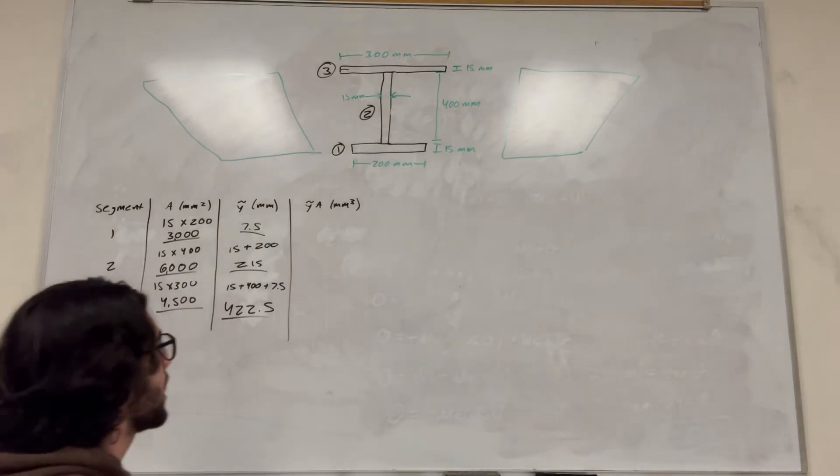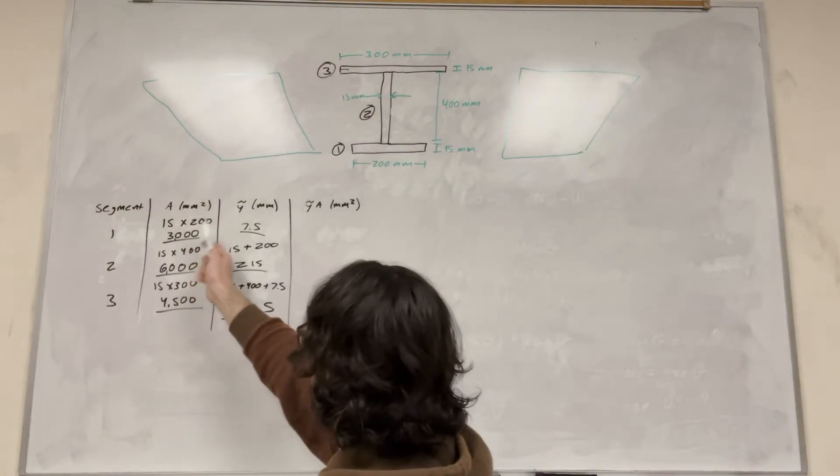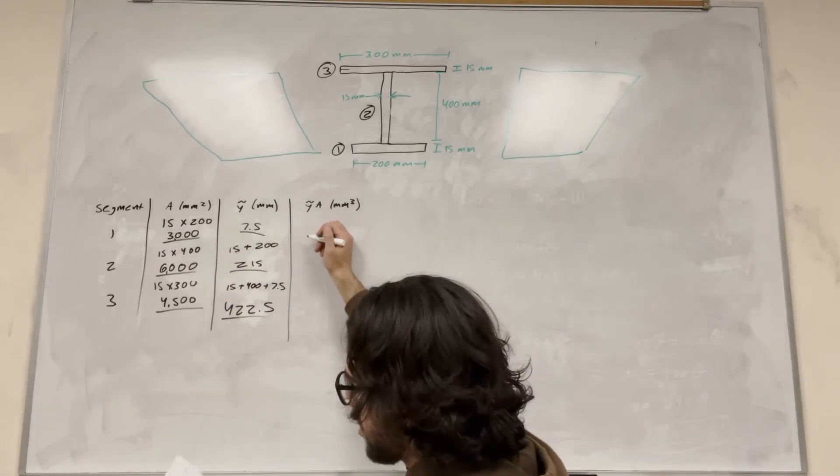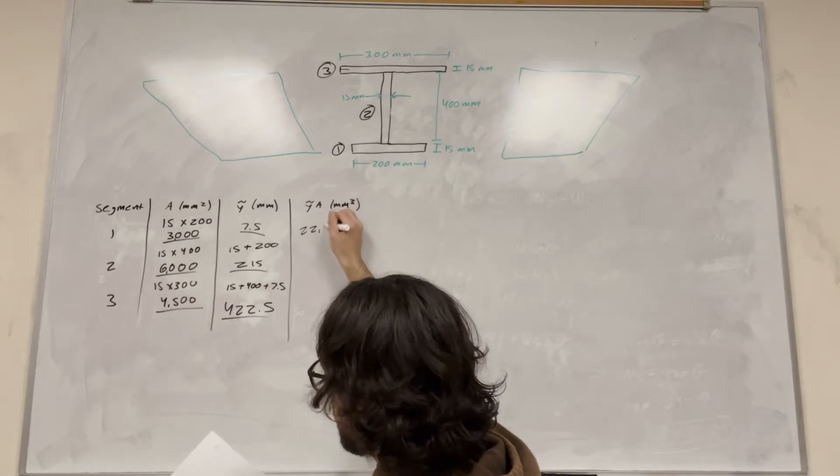So then all we have to do is multiply these numbers together. So we're multiplying Y tilde times A. So 7.5 times 3,000 is 22,500.